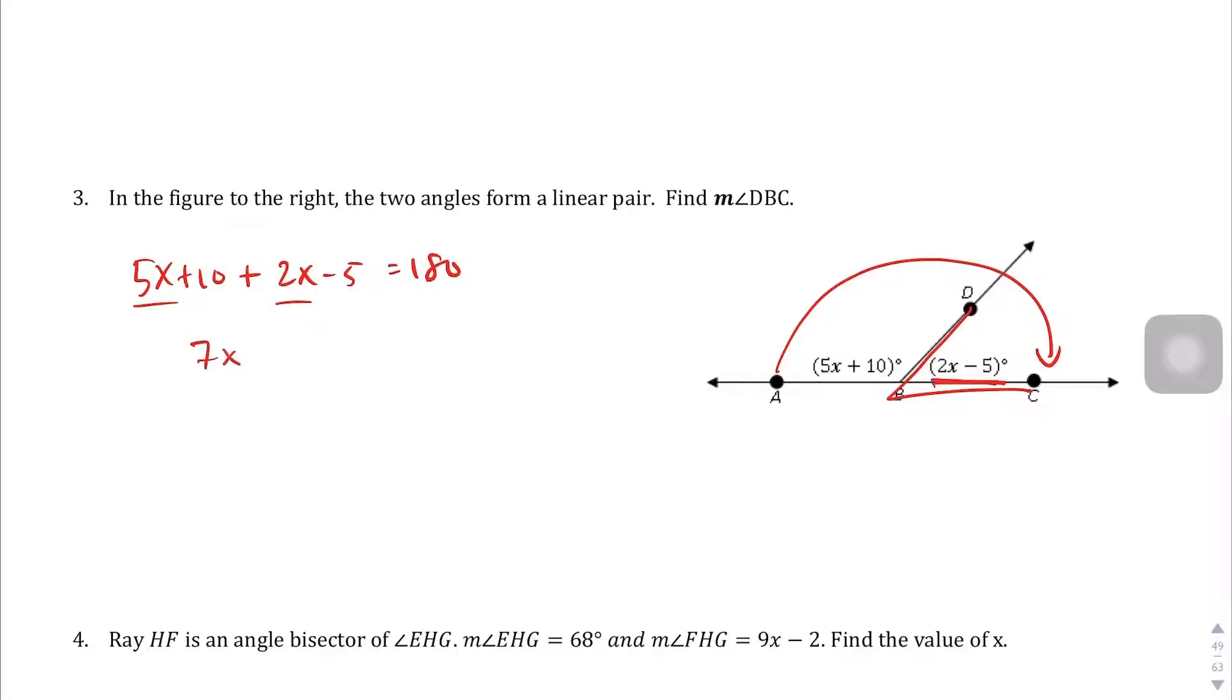5x plus 2x is 7x. 10 plus negative 5 gives us positive 5 equals 180. Let's subtract 5 from both sides. You get 7x equals 175. Divide both sides by 7, and we get x equals 25. And then we're going to plug it back in here since we know what x is. 2 times 25 minus 5 is 45. So angle DBC is equal to 45 degrees.